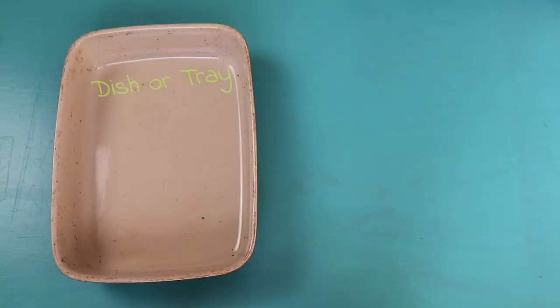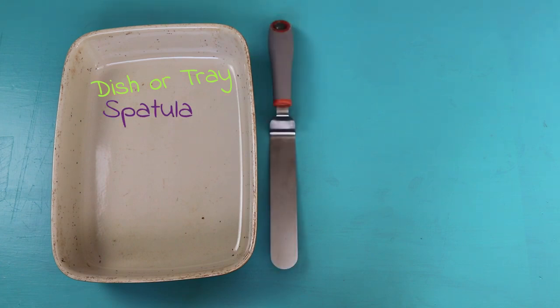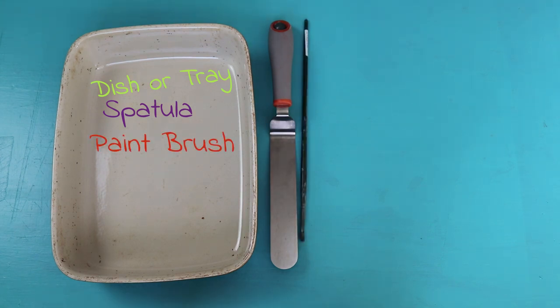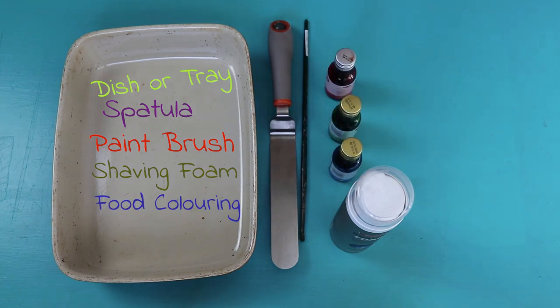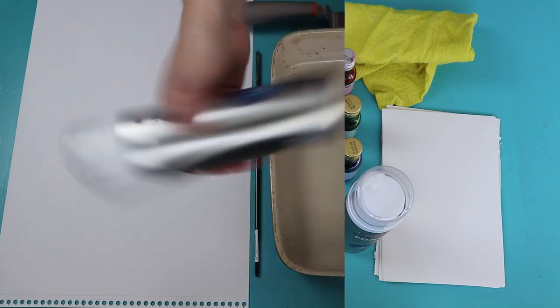For this project you will need an old dish or tray, a spatula, a paintbrush, shaving foam, food coloring, an old cloth and sheets of heavy A5 paper.